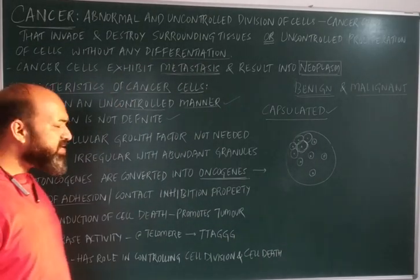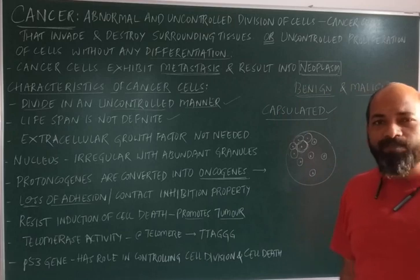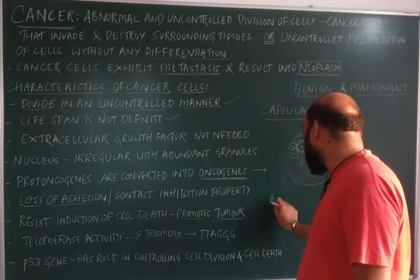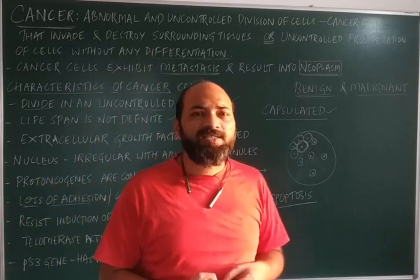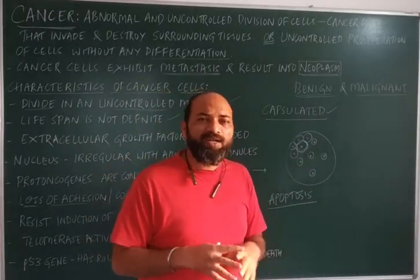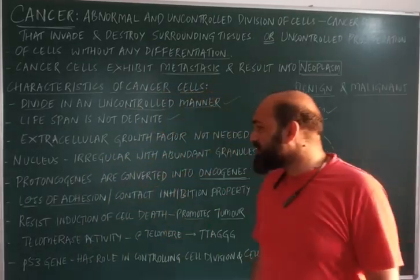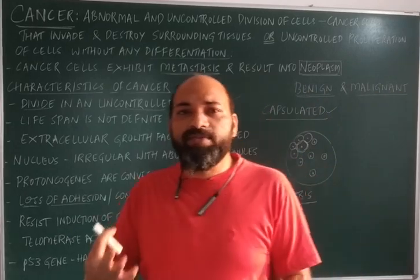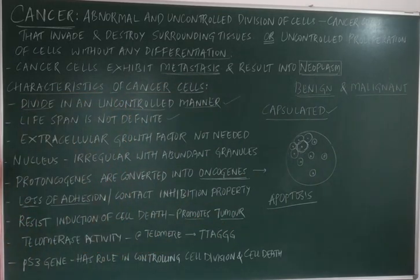Seventh, cancer cells resist the induction of cell death, which promotes tumor formation. Normal cells undergo a process called apoptosis — programmed cell death — after completing their assigned function. Cancer cells overcome this cell death mechanism, allowing them to proliferate continuously and form tumors.